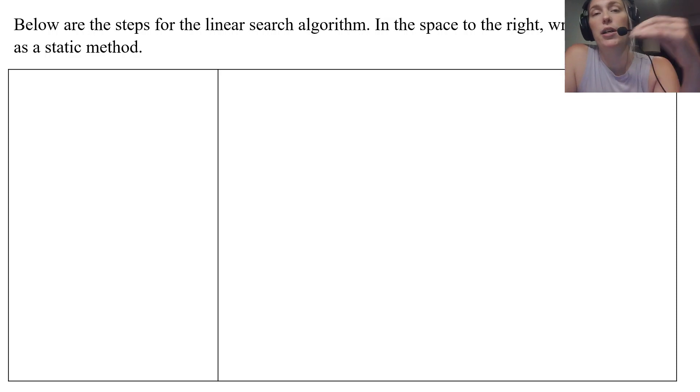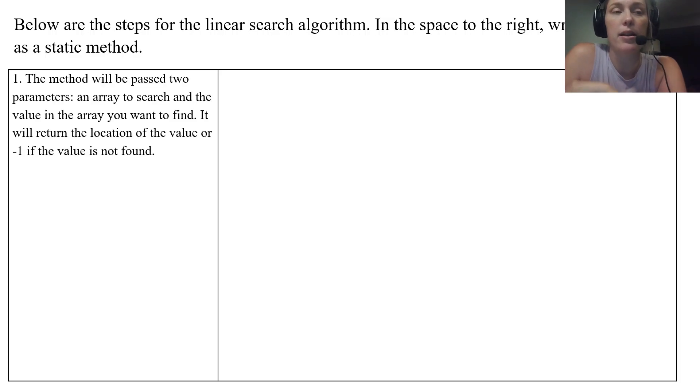So here are the steps for a linear search algorithm. On the left are the actual steps written out, and then on the right we're gonna write the algorithm, the code out as a static method. So part one, if we're writing this as a method, the method will be passed two parameters. It needs the array that's going to be searched through, and it's going to be the value that we want to find in that array. It will return the location of the value or a negative one if it's not found.